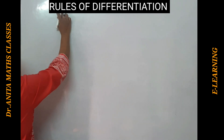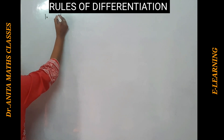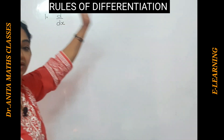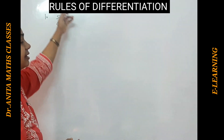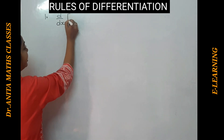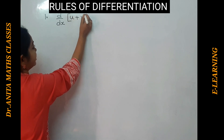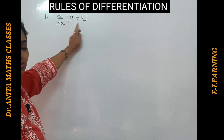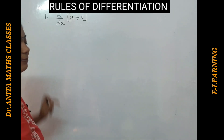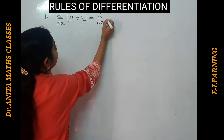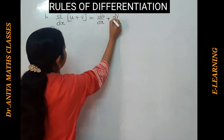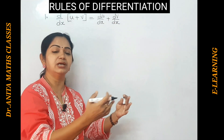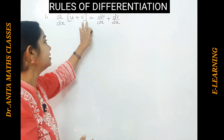The first rule is the sum and difference rule. d/dx — that means the change in the function y with respect to x — is the derivative. d/dx of functions u and v: if there is a sum, it is simply d/dx of u plus dv/dx. For n number of functions you keep on differentiating each function separately.